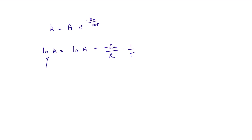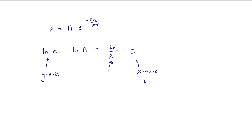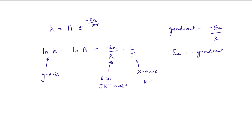Given a set of results, you calculate the natural logarithm of the rate constant at different temperatures and plot that on the y-axis — no units — and plot 1 over temperature on the x-axis in kelvin to the minus 1. Make sure your temperature is in kelvin; sometimes it's given in degrees C and you need to convert. The gas constant R, 8.31 joules per kelvin per mole, is always given on your datasheet. The gradient equals minus Ea over R, so activation energy equals minus the gradient times R in joules per mole. Divide by 1000 to convert to kilojoules per mole.